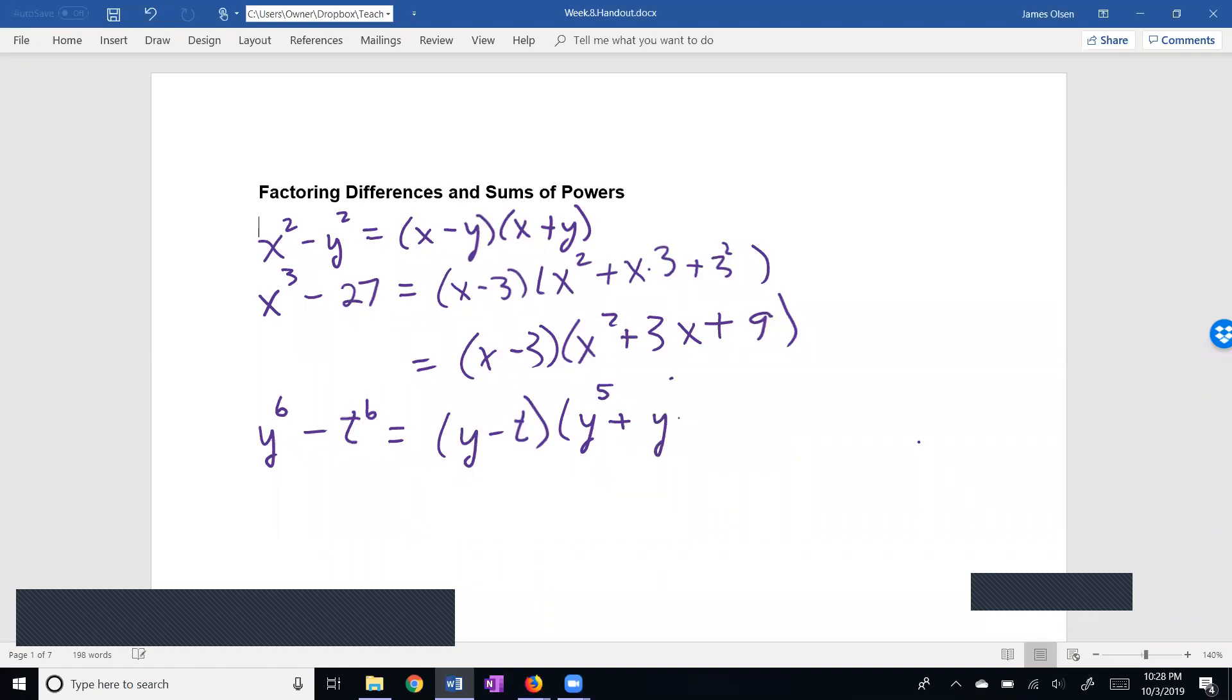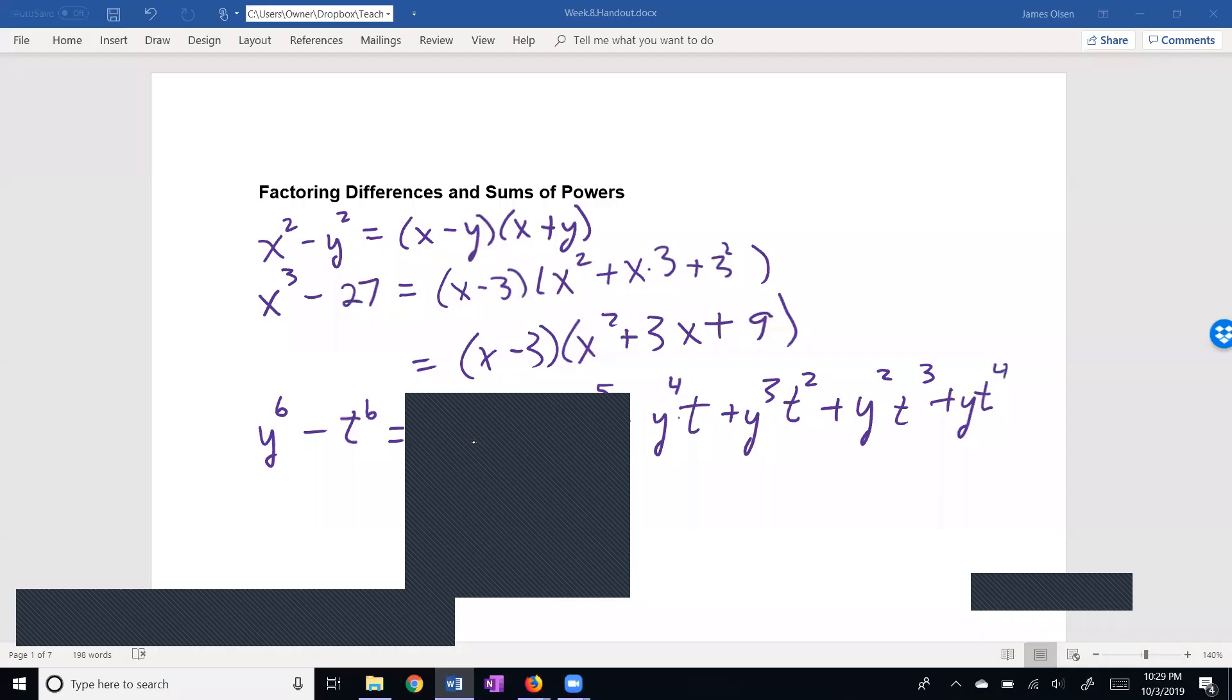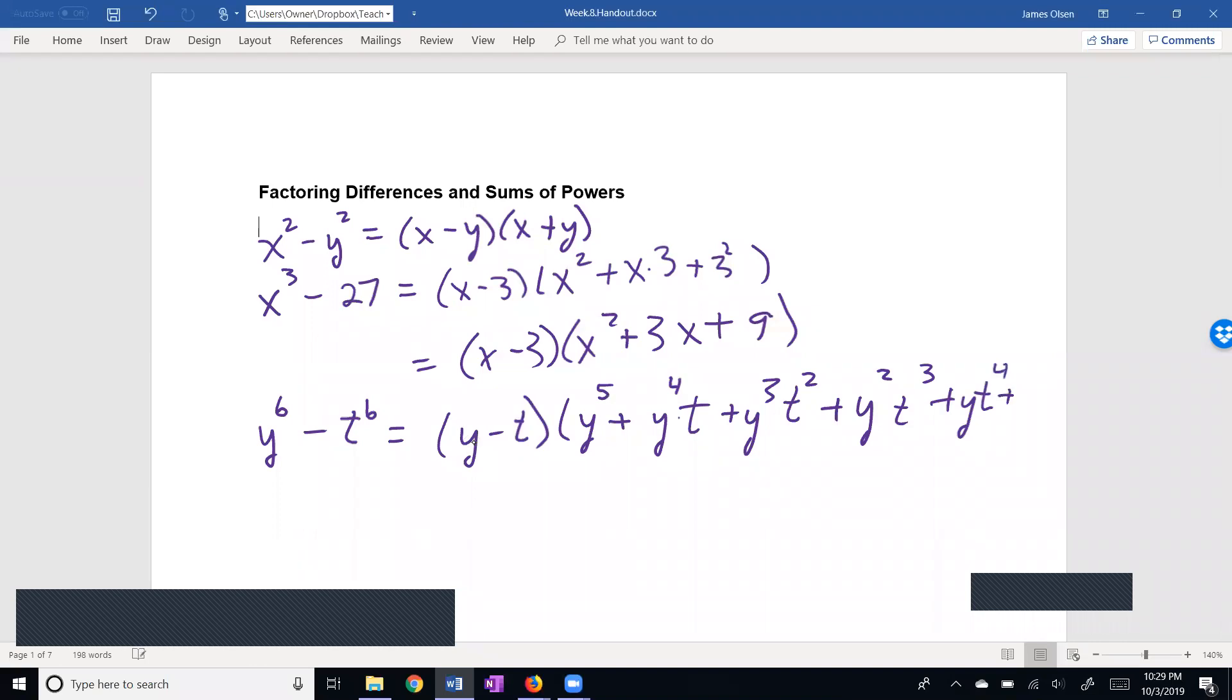Now I'm going to have y to the fourth times t to the first plus y to the third times t squared plus y to the second times t cubed plus y times t to the fourth plus t to the fifth power.